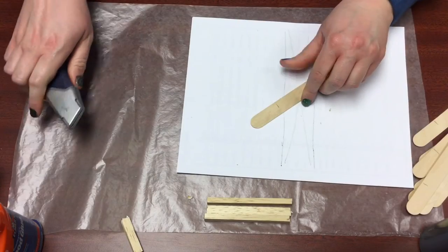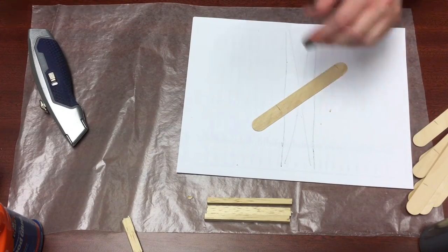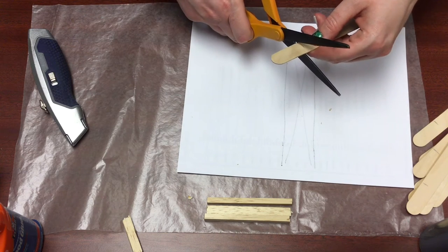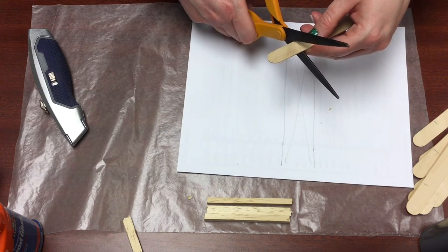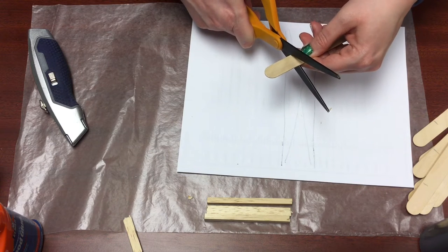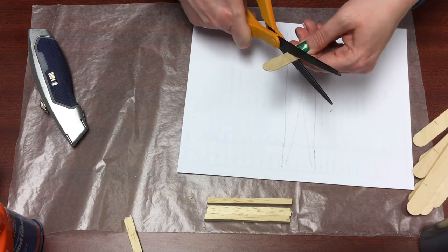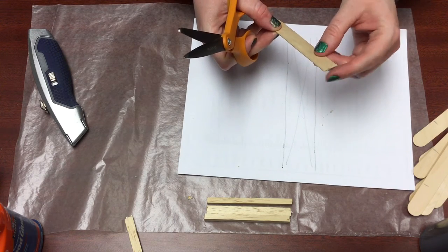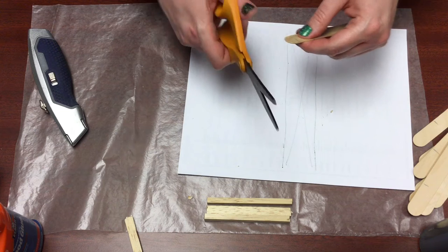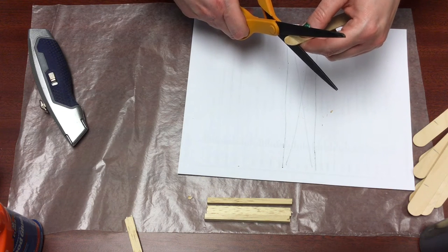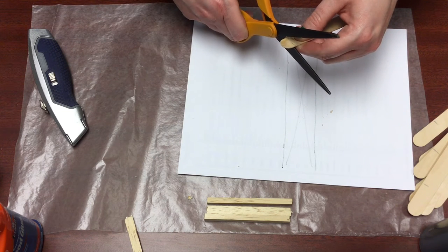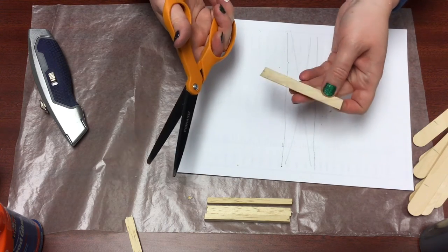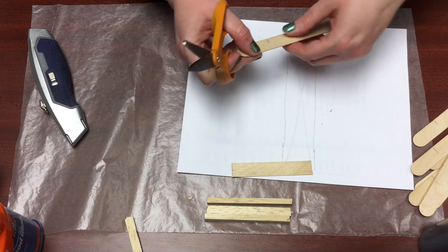For the craft sticks, I just use a sharp pair of scissors. You can cut through the craft sticks surprisingly easily. Just do it carefully so that you don't split the wood, but I just find that it gives me more control and it goes through real easy. Just do that with all of your craft sticks.